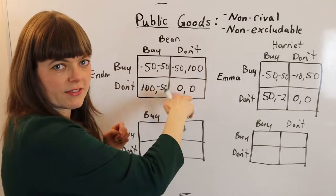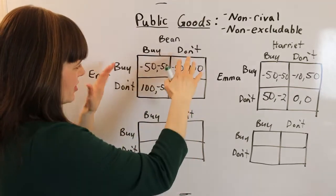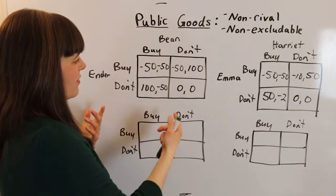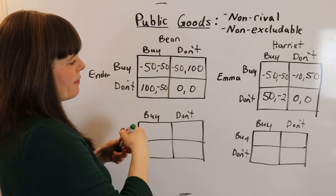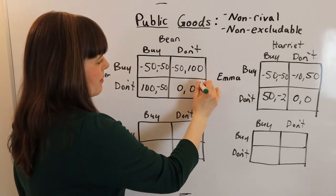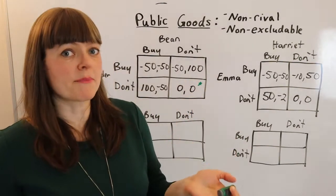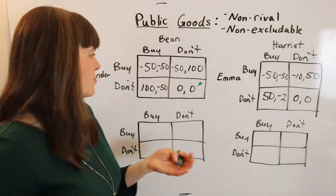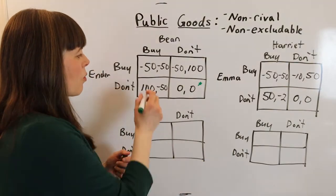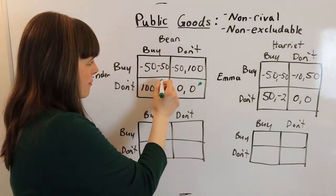And if there's no TV, there's no utility. Looking at this Game Theory Matrix, the Nash Equilibrium is for neither person to buy a TV. But that's not Pareto optimal, because we could have a situation where one person bought the TV — for example, Bean buys the TV.